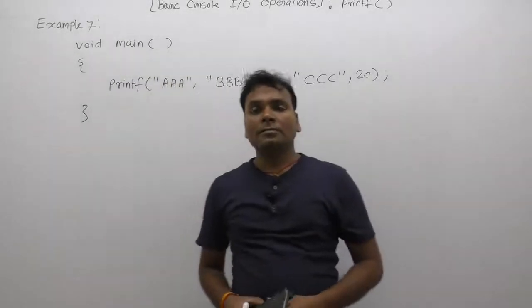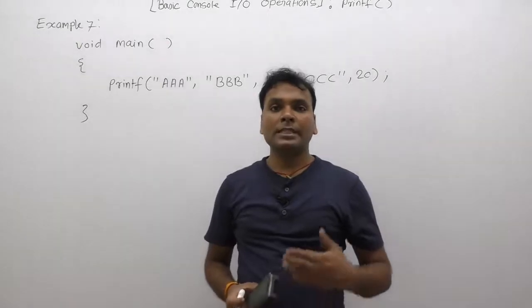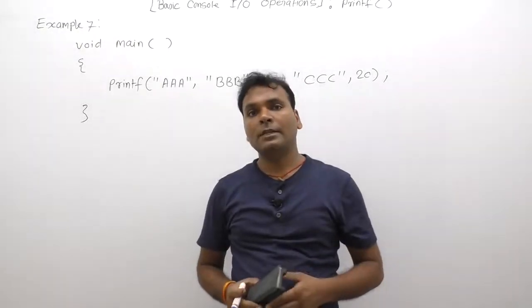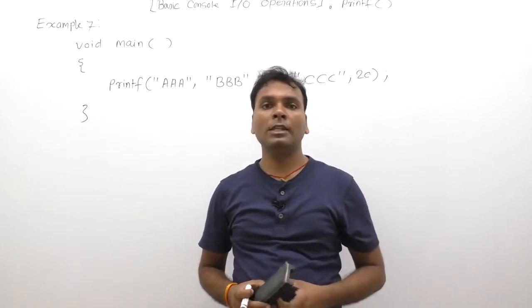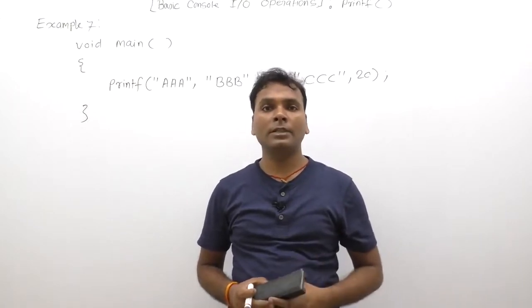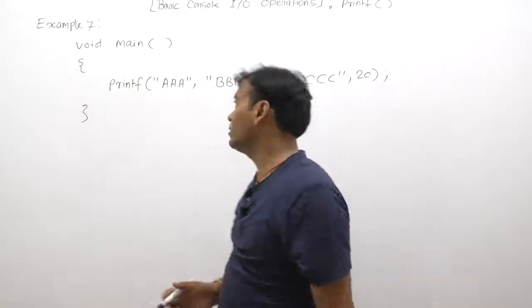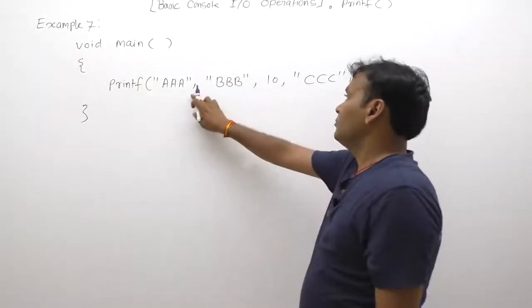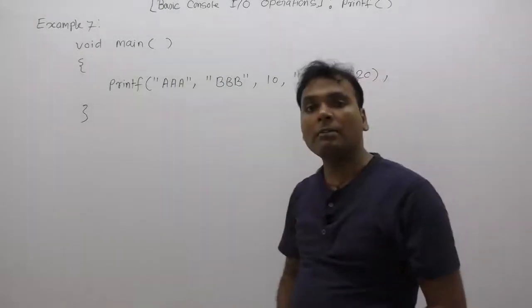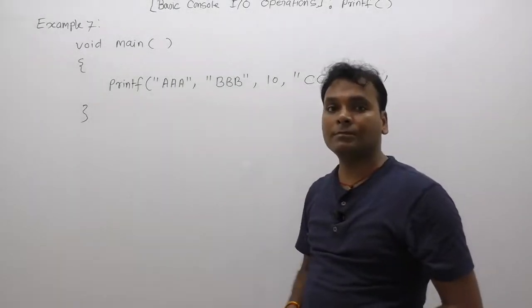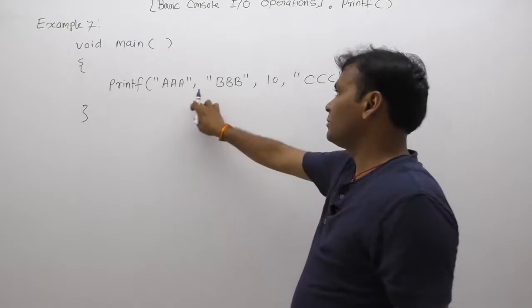Our next example, as we discussed during basics of the printer functions: printer function can take any number of input values and any types of input values. Here we are supplying five parameters—one, two, three, four, five—we are supplying five arguments to the printer function of different types.